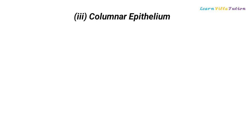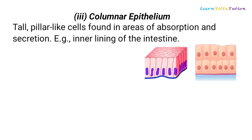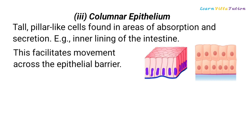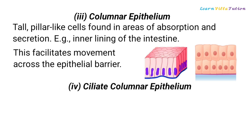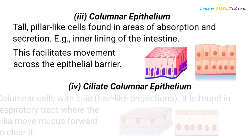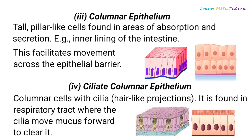Columnar Epithelium consists of tall, pillar-like cells found in areas of absorption and secretion, for example the inner lining of the intestine. This facilitates movement across the epithelial barrier. Ciliated Columnar Epithelium consists of columnar cells with cilia — hair-like projections. It is found in the respiratory tract, where the cilia move mucus forward to clear it.